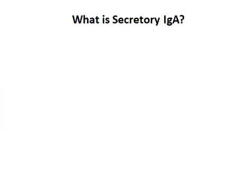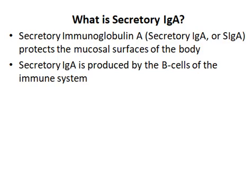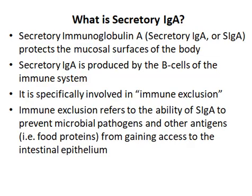Secretory IGA lines the mucosal surfaces of the body including the gastrointestinal tract, and it's the first line of defense against foreign invaders including infections. Secretory IGA is produced by the B cells of the immune system and it is specifically involved in immune exclusion, which refers to the ability of secretory IGA to prevent microbial pathogens and other antigens from gaining access to the intestinal epithelium.